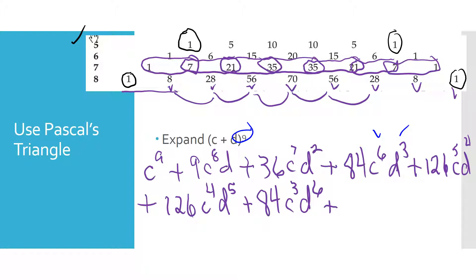plus, 28 plus 8 is 36. 36, C squared, D to the 7th, plus, 8 plus 1 is 9. 9, C to the 1st power, D to the 8th power, and then we finish this with D to the 9th power.